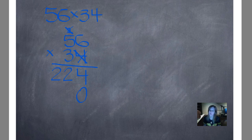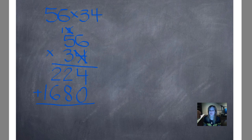Now we're done multiplying by this number, so we're going to move to the 3. We're going to multiply the 3 first by the number in the ones place, then by the number in the tens place. So 3 times 6 is 18. Carry our 1, and 3 times 5 is 15, plus 1 is 16. If that was confusing, rewind and watch it again because we always follow the exact same pattern. Now adding our partial products: 4 plus 0 is 4; 2 plus 8 is 10, carry our 1; 2 plus 1 is 3, plus 6 is 9; and 1 plus 0 is 1.